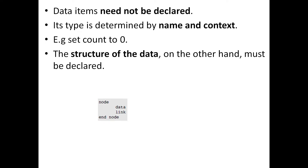However, we do have to declare the structure of the data even though we don't need to declare data types. There are two types of data: simple data like a single integer or character, and complex data like collections such as structures, arrays, unions, or classes. In such cases, you have to first define what the structure is going to be and what it will contain before you can use it.